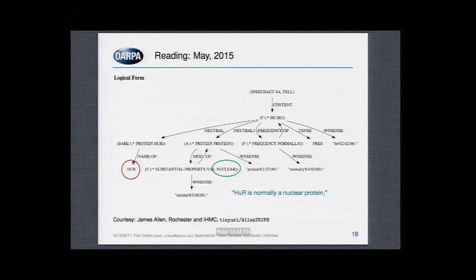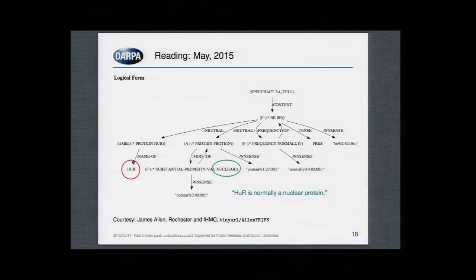In the last few months, the reading systems have gotten a lot better. Going back to the paper about translocation of the protein HUR — this is the output of one of the more sophisticated, semantically deep parsers developed by James Allen and his team at Rochester. There's a URL — tiny URL Allen trips — you should try it out. Here's the parse tree for the first part of that sentence: HUR is normally a nuclear protein. It appears to be largely correct: it identifies that this is about something being normally true, that it's about a protein, and that the protein is the subject.